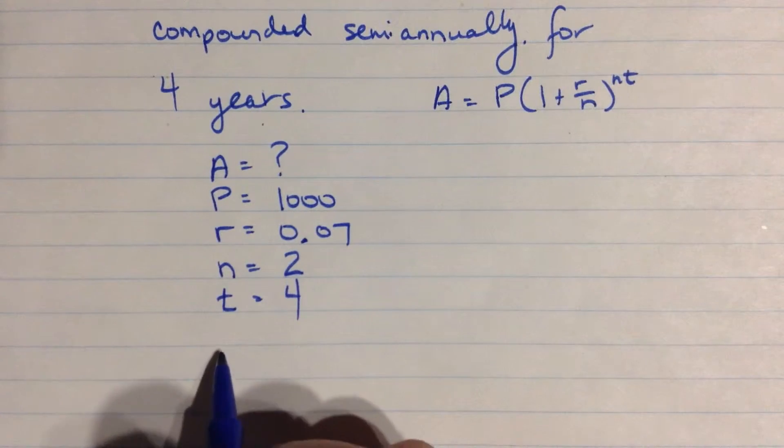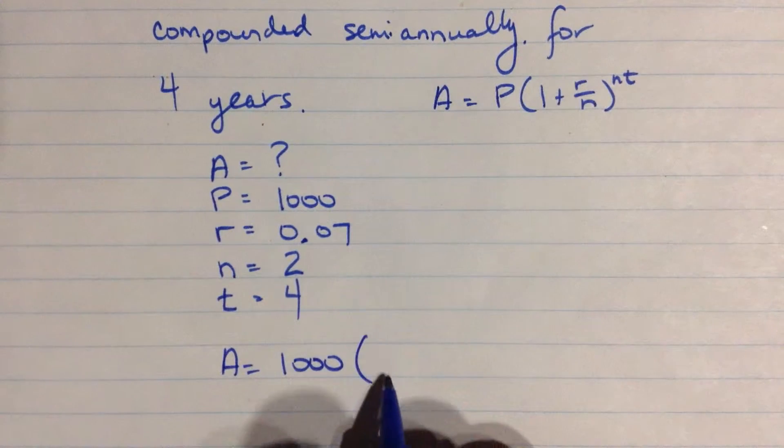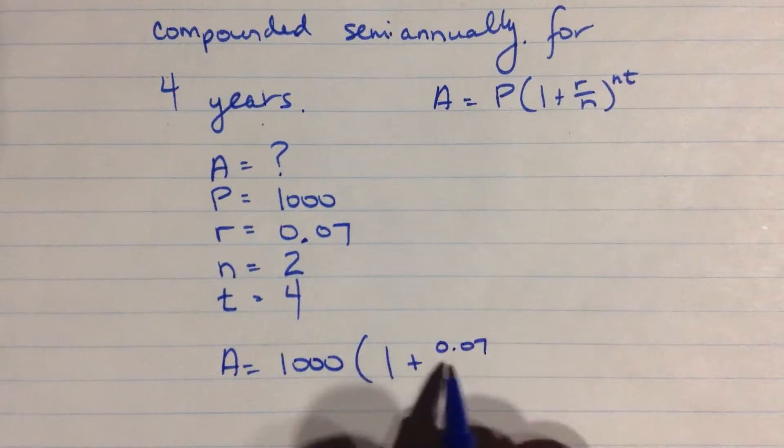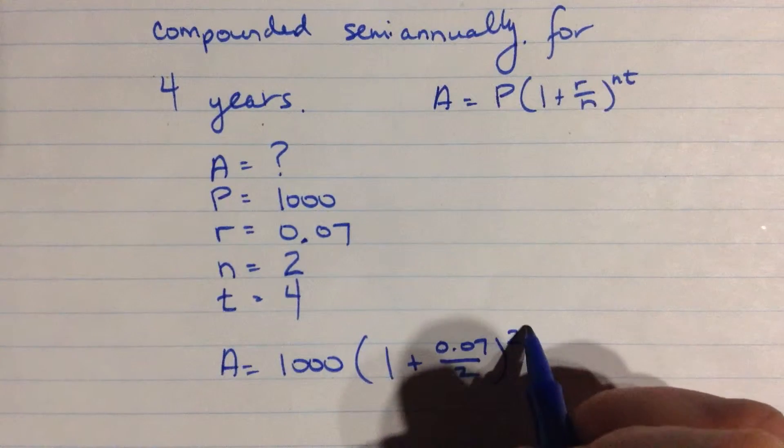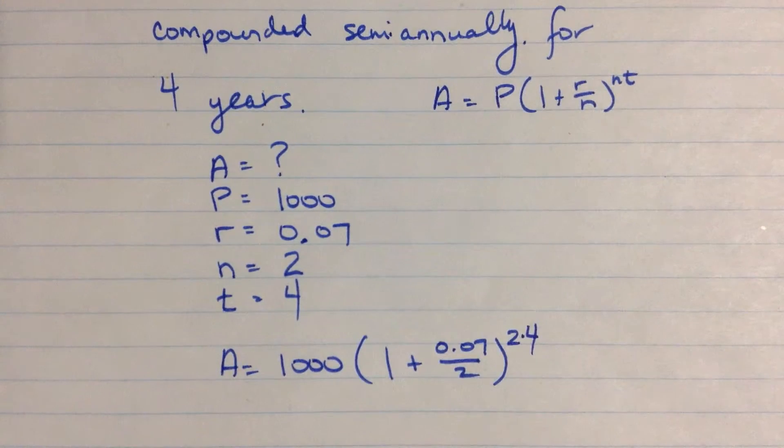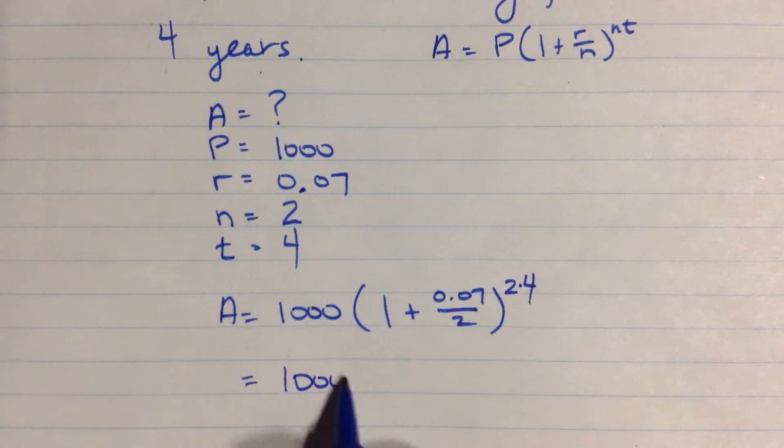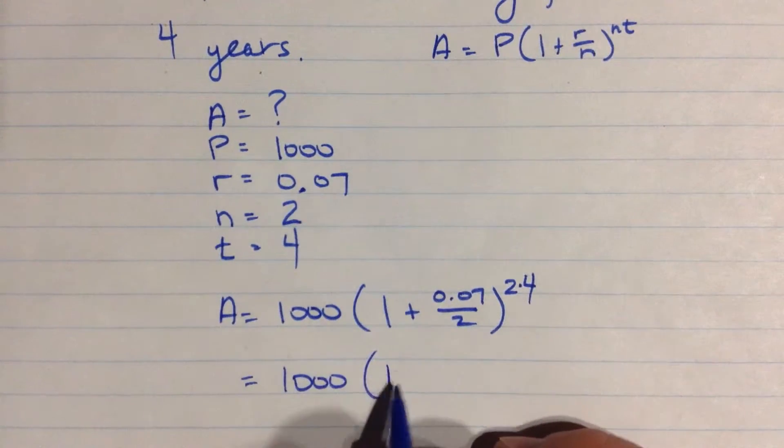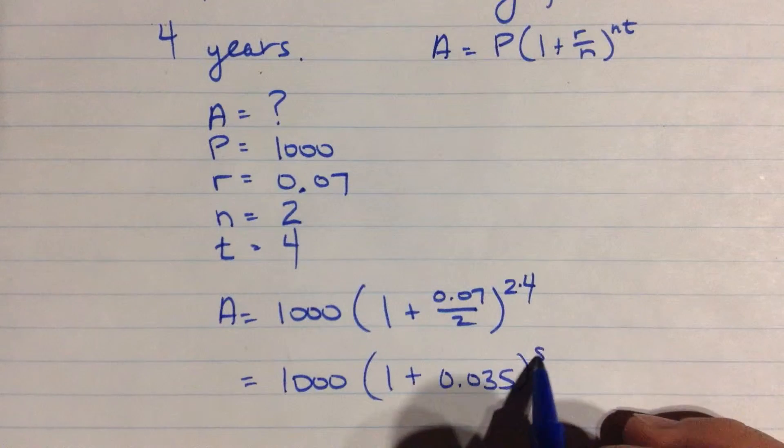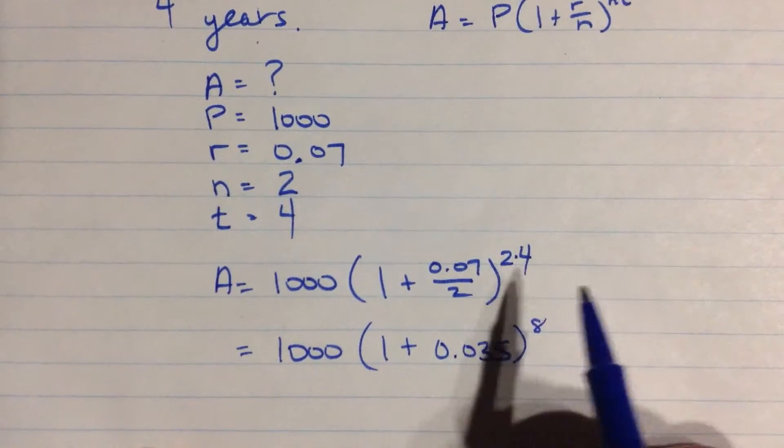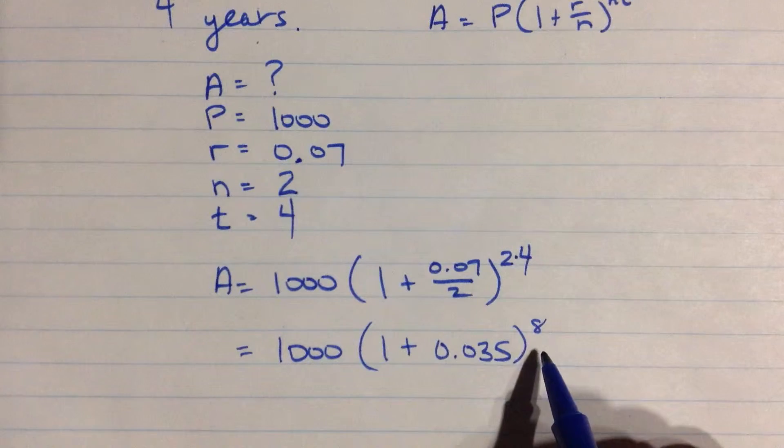So let's fill this all in. We have A is equal to 1,000 times 1 plus 0.07 divided by 2, and the exponent then is 2 times 4. Let's see what this does then, how this changes things. 1,000 times, let's do what's inside the brackets here first. 1 plus, this is 0.035, and then we'll be raising it to the power of 8. So you see what this does is this has cut the rate in half, but we're going to be using it twice as many times.